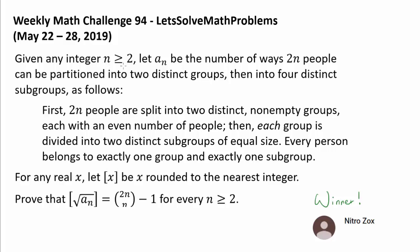Given an integer n greater than or equal to 2, let a_n be the number of ways 2n people can be partitioned into 2 distinct groups, then into 4 distinct subgroups as follows. First, 2n people are split into 2 distinct non-empty groups, each with an even number of people.